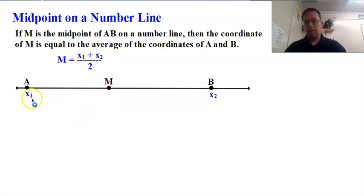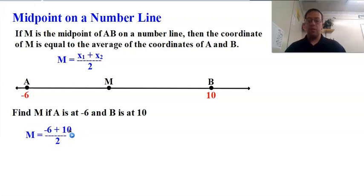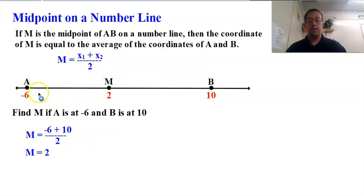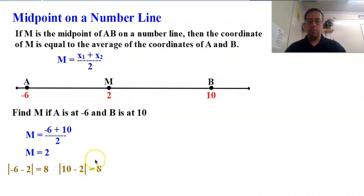Let's find M if A is at negative 6 and B is at 10. We just take those two points, plug them into the formula: (−6 + 10) / 2 = 4 / 2, and M is 2. We can check this because the length of AM has to equal the length of MB. Distance is the absolute value of the difference of the two points — from the ruler postulate. So |−6 − 2| = |−8| = 8. And for MB: |10 − 2| = 8. Those are equal, so we did it right.